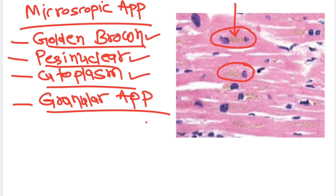So to summarize: lipofuscin pigment is golden brown in color, has a perinuclear location, is present in the cytoplasm, and has a fine granular appearance. That's all about lipofuscin pigment. Hope you have enjoyed this video. See you soon with the next video — till then, take care and bye.